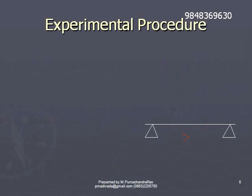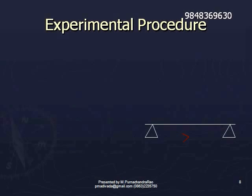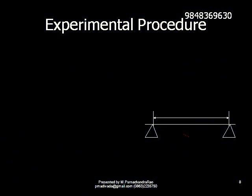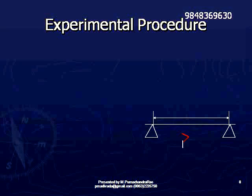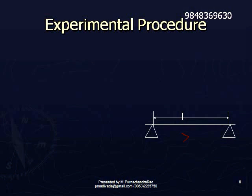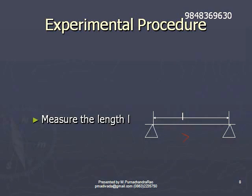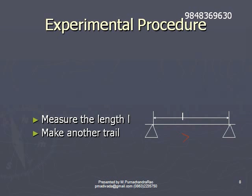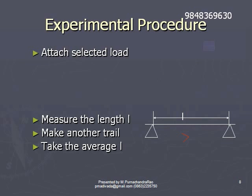To repeat the procedure: attach a selected load to the weight hanger and vibrate the tuning fork. Keep it on the sonometer box with its stem, then adjust the distance between the bridges until the paper rider falls on the wooden board. Then measure the distance between the two bridges — the length in unison — take one more trial and take the average of these two.